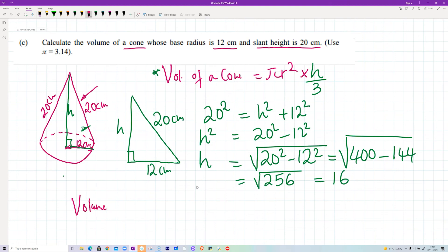Volume is going to be equal to pi, which we're told to use 3.14, times r squared of the circle. The radius of this circle is 12, so 12 squared, times the vertical height, which you now know is 16, everything divided by 3. If you work this out, then you will get the answer is 2411.52 centimeters cube. I hope you know how to multiply. Thank you for watching guys and bye for now.